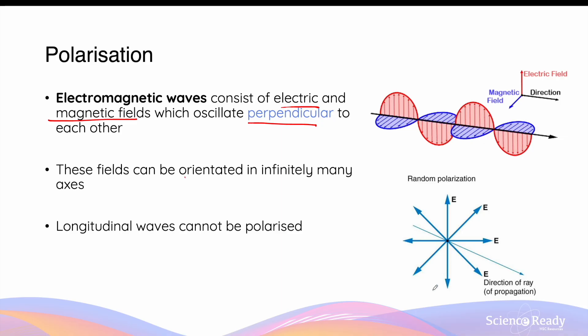When the electric field of an EM wave is at an angle, the magnetic field must also be at a different angle than what is normally illustrated, such that the angle between the magnetic field and the electric field will remain perpendicular.